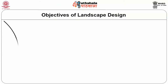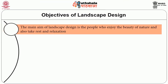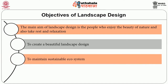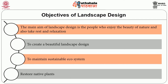Then we will see the objectives of landscape design. The main objective is that people enjoy the beauty of nature and also take rest and relaxation. The second objective is to create a beautiful landscape design. Then to maintain the sustainable ecosystem. Then to restore the native plants. Landscape needs an expert to do landscaping on a big scale, but whether small or big, colour, harmony and balance must be developed for a successful landscape to be achieved.